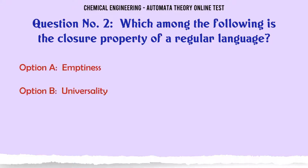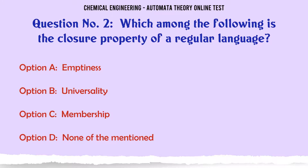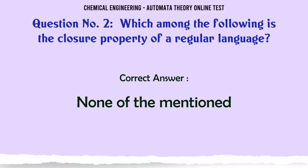Which among the following is the closure property of a regular language? A. Emptiness, B. Universality, C. Membership, D. None of the mentioned. The correct answer is: None of the mentioned.